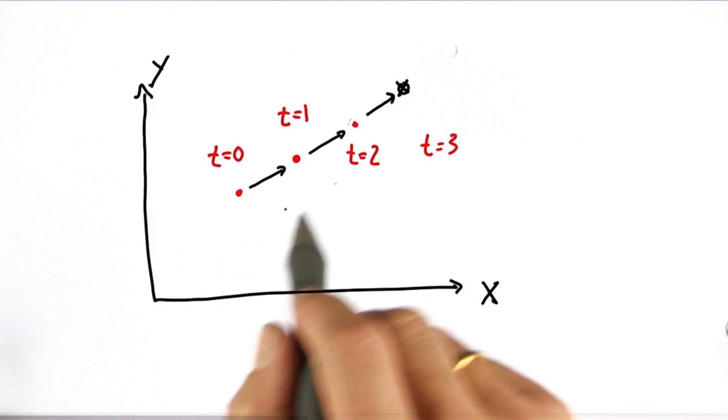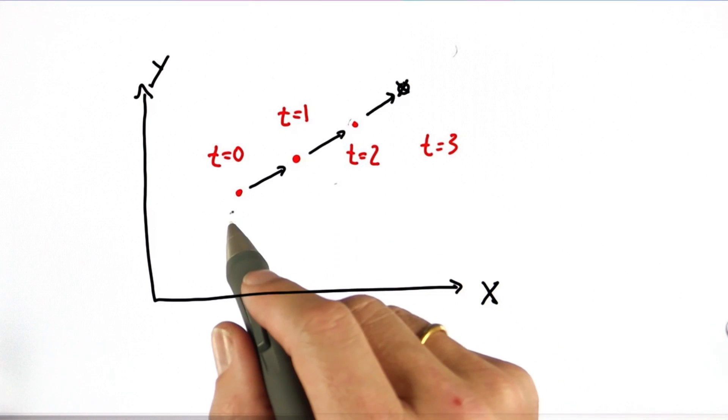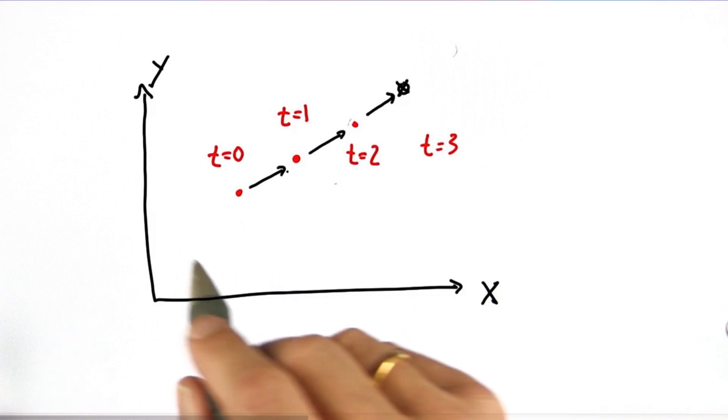Now notice, the sensor itself only sees position. It never sees the actual velocity. The velocity is inferred from seeing multiple positions.